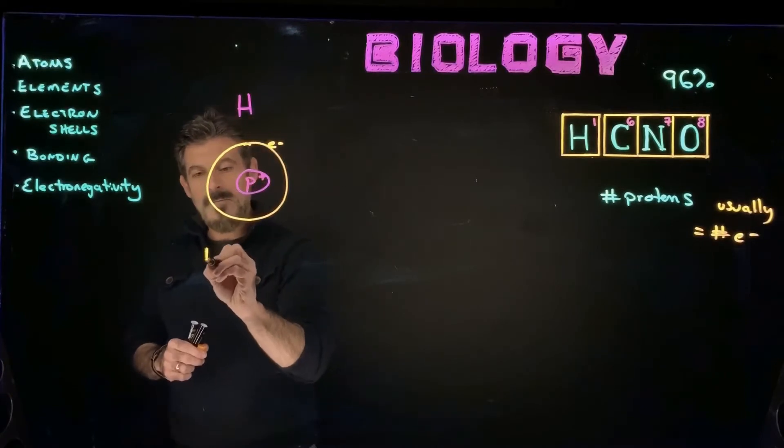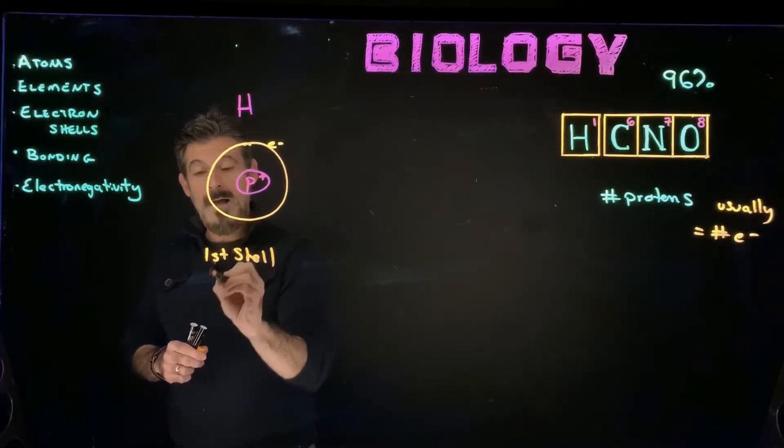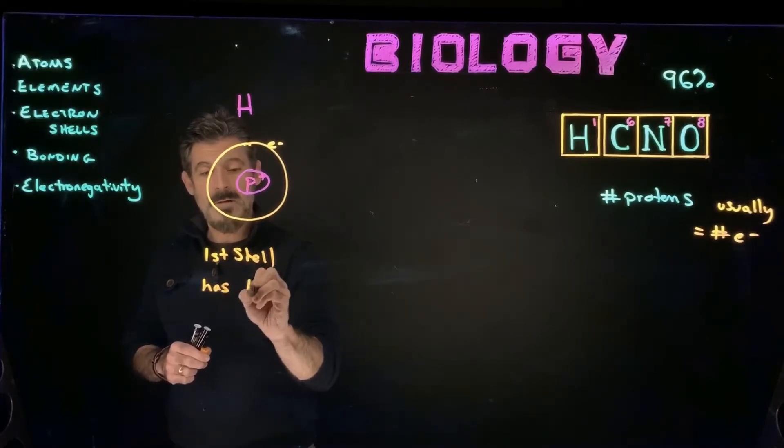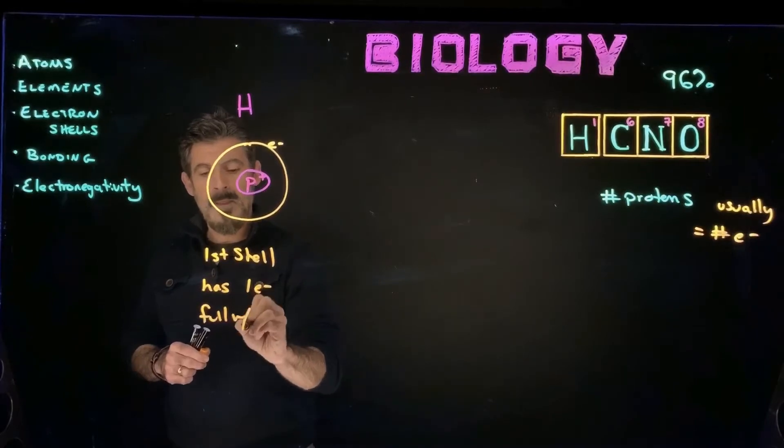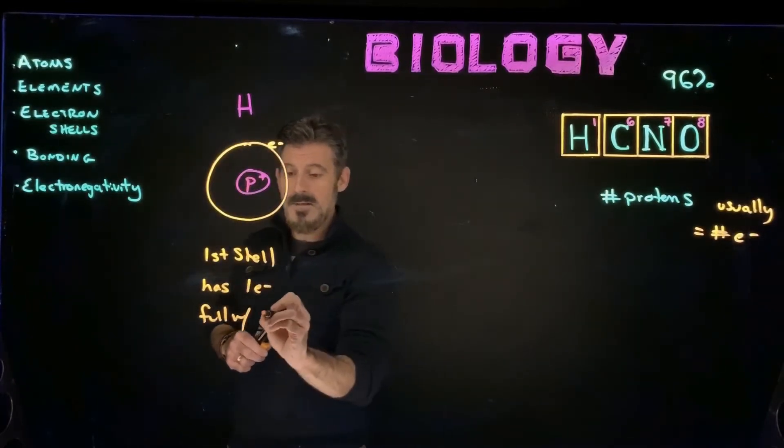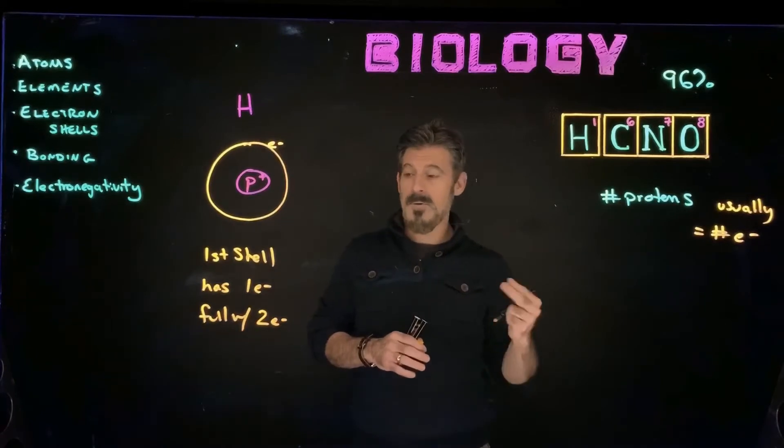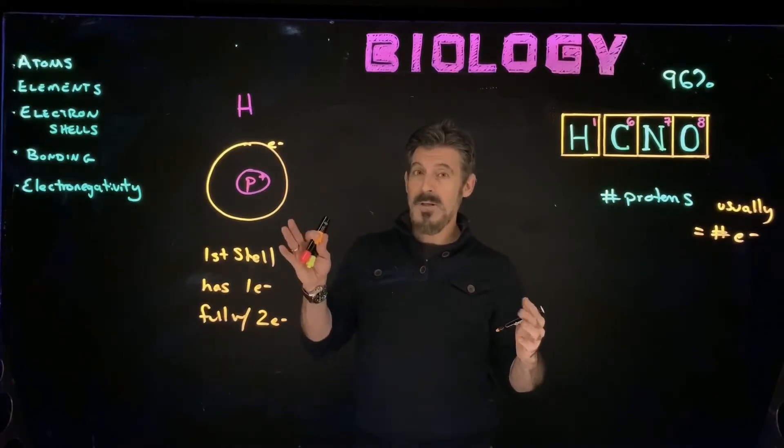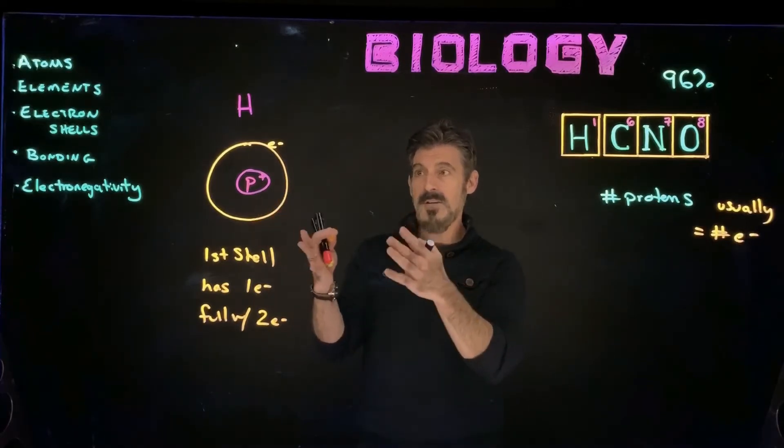So in this first shell, hydrogen has one electron. And a first shell like this is full with two electrons. That means it can hold one more electron before it's full. And that's going to be why elements bond with other elements is because they're trying to fill this outer shell with electrons.